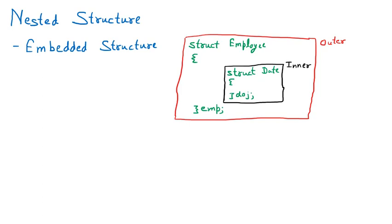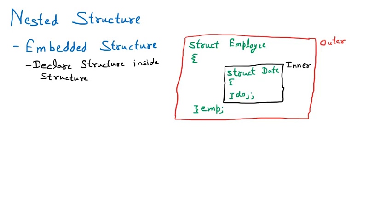It is a very interesting topic because if I have to access the member of date, how will I access it? Before that, we must understand what the embedded structure is. We can say that the embedded structure declares a structure inside another structure — one structure is declared inside the outer structure. Now I am taking an example using different data types to make this clear.